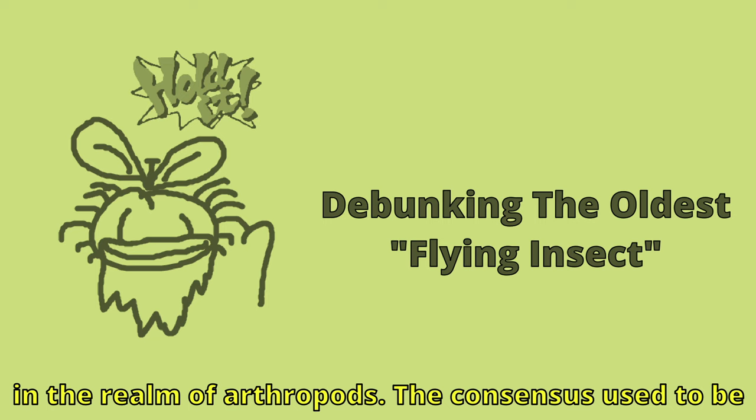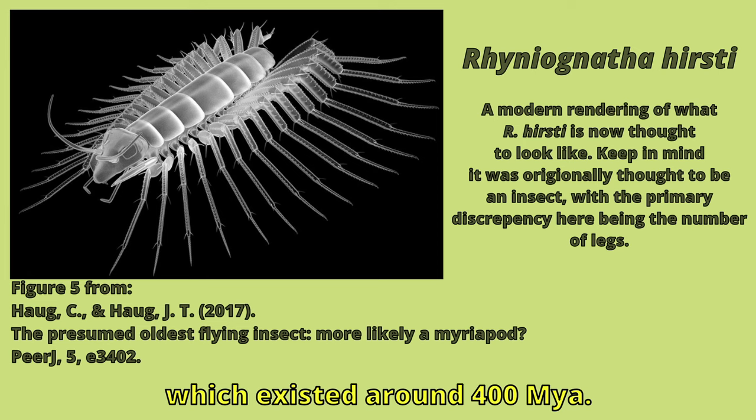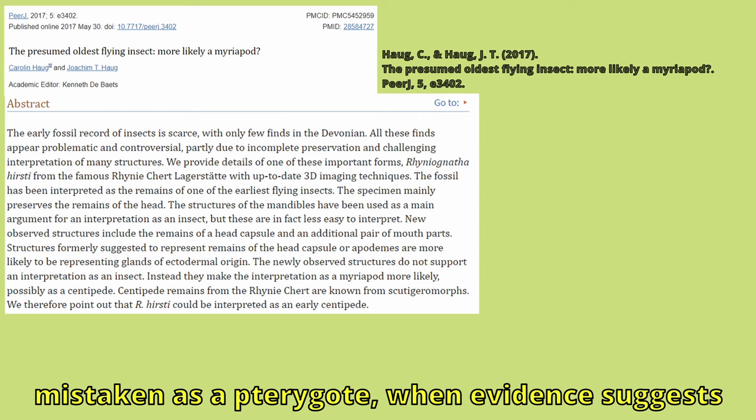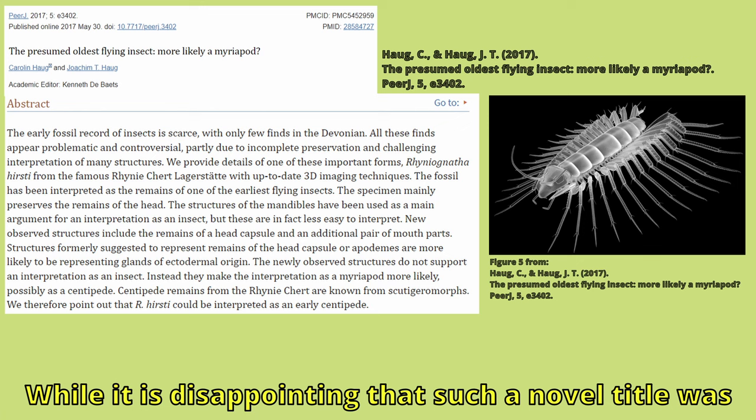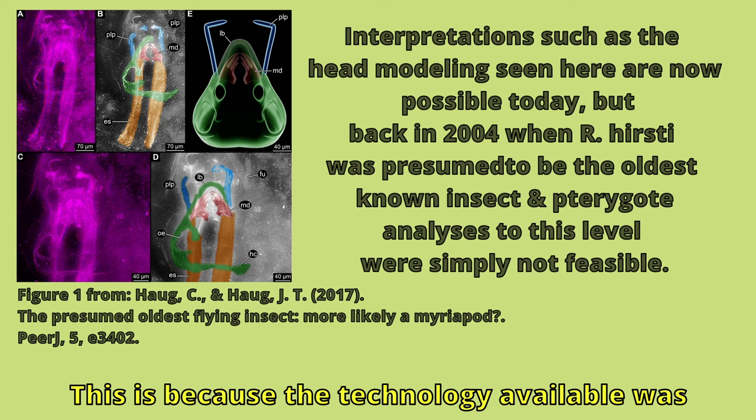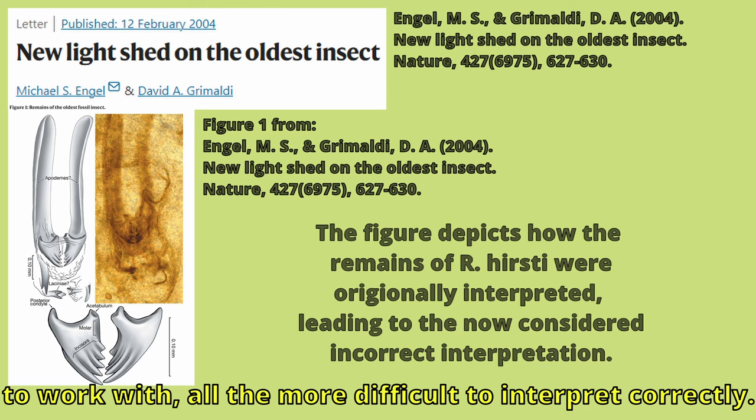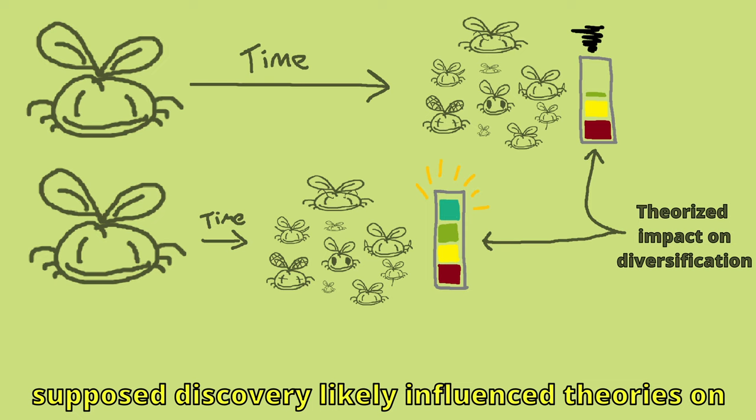Earlier I mentioned that the first appearance datum can be unreliable in the realm of arthropods. The consensus used to be that the oldest known flying insect, and basic run-of-the-mill insect, was Rhyniognatha hirsti, which existed around 400 million years ago. The following paper described that Rhyniognatha hirsti was mistaken as a Pterygote, when evidence suggests that it was actually an early myriapod resembling a house centipede. While it is disappointing that such a novel title was incorrectly assigned, there was ample room for error, as the technology available was significantly less advanced than it is today, making the arthropod fragments all the more difficult to interpret correctly. It is more disappointing that this supposed discovery likely influenced theories on how quickly insects were able to diversify after developing wings, downplaying their significance significantly.